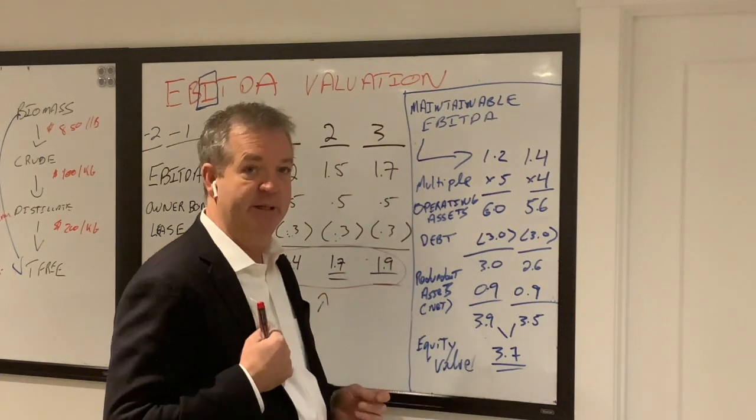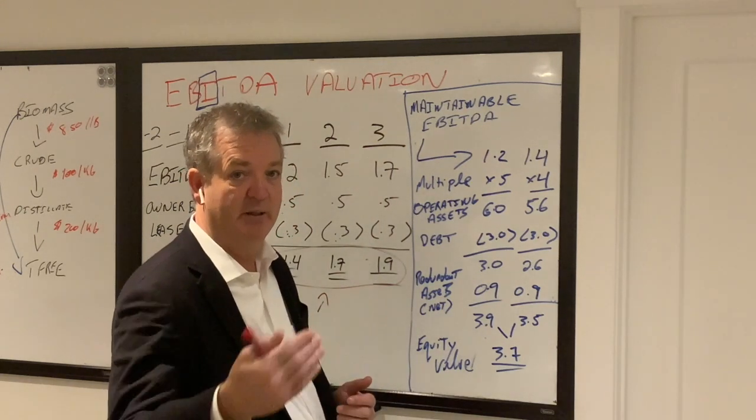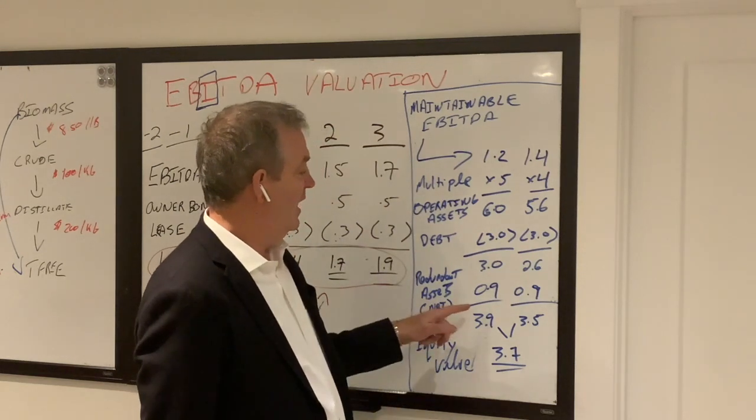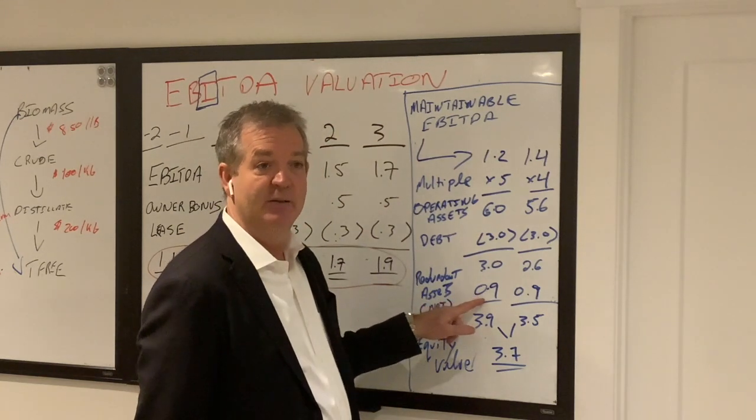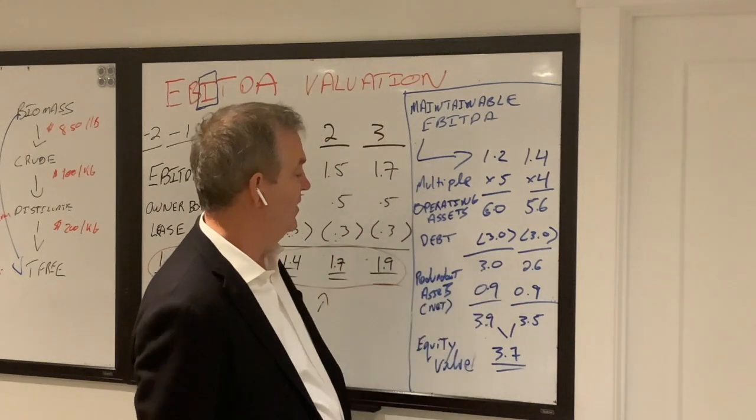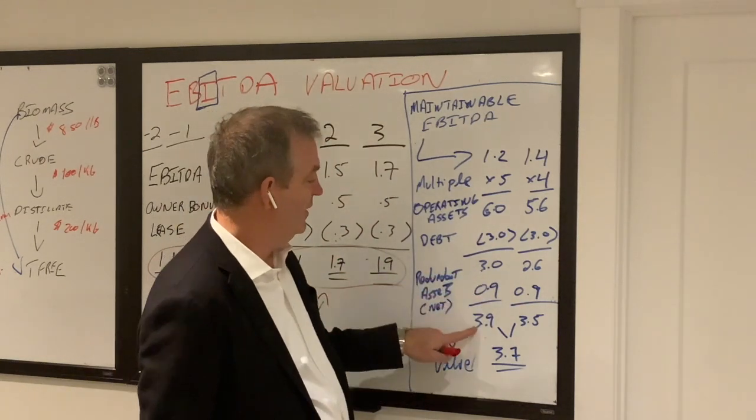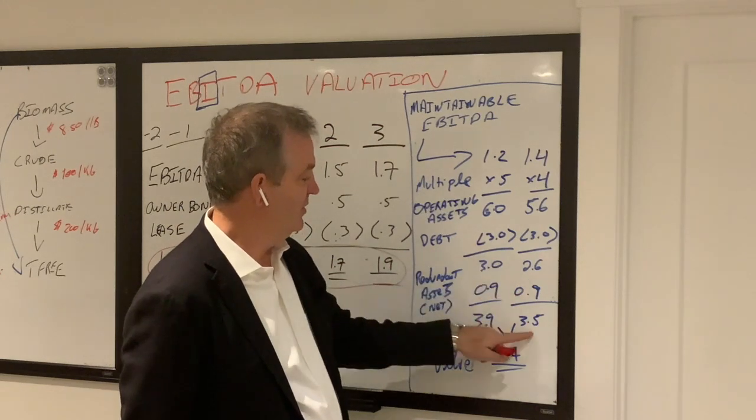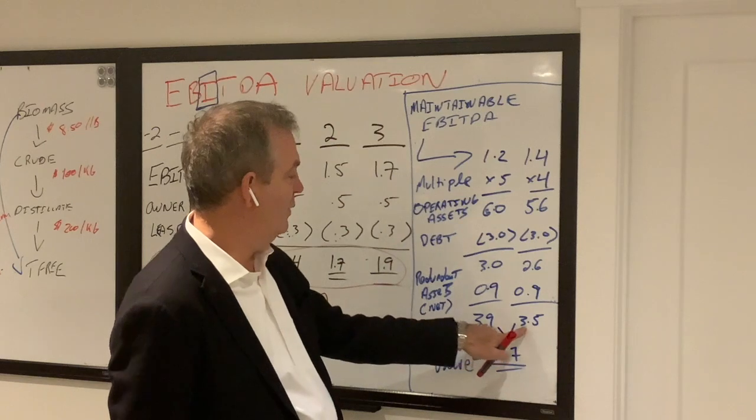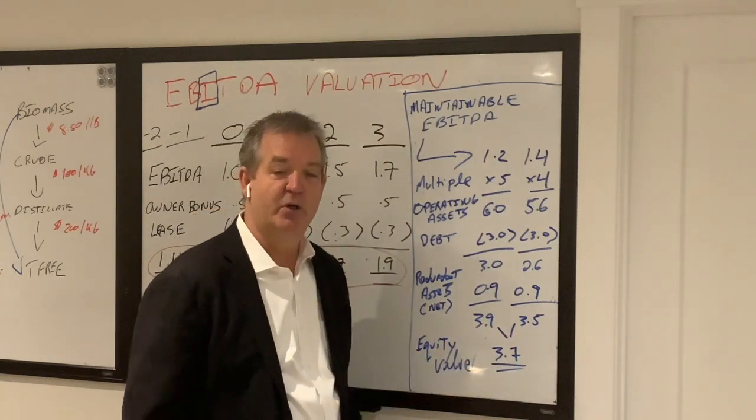And the real estate, when you sell it to me, will not be employed in the business because I'll actually be leasing it from you. And so I've assumed that the net equity, so that's the value of the real estate less the debt here is 0.9, is $900,000. Three plus 0.9 is 3.9, 2.6 plus 0.9 is 3.5. So now we have a range of 3.5 to 3.9 million dollars.